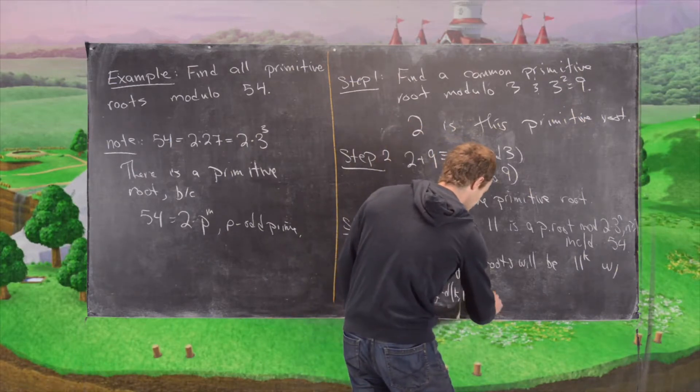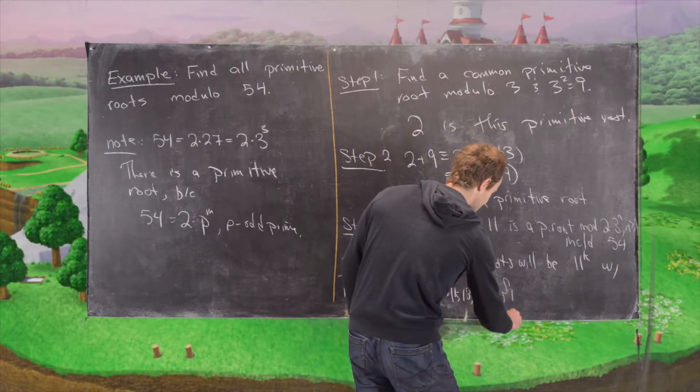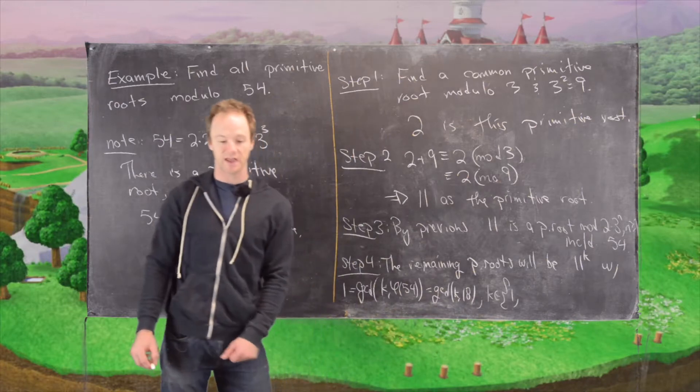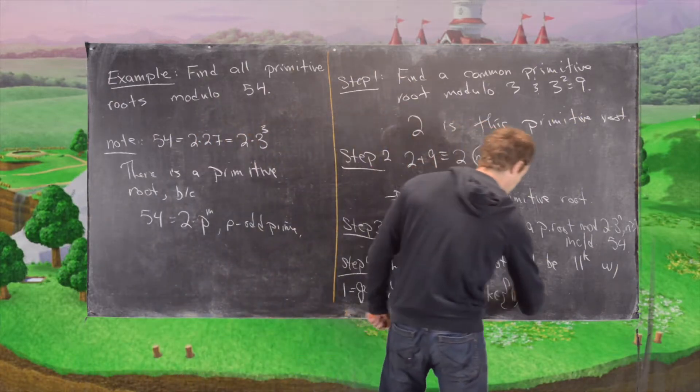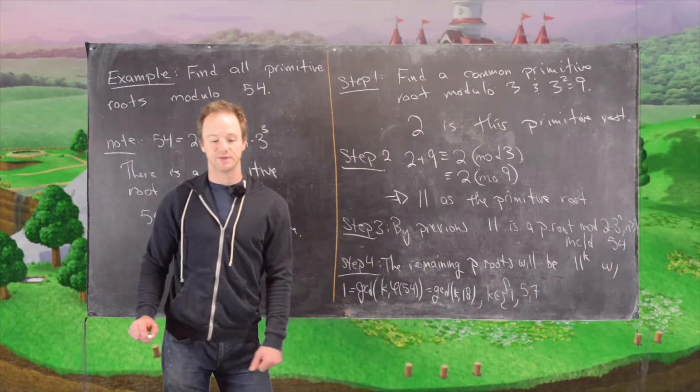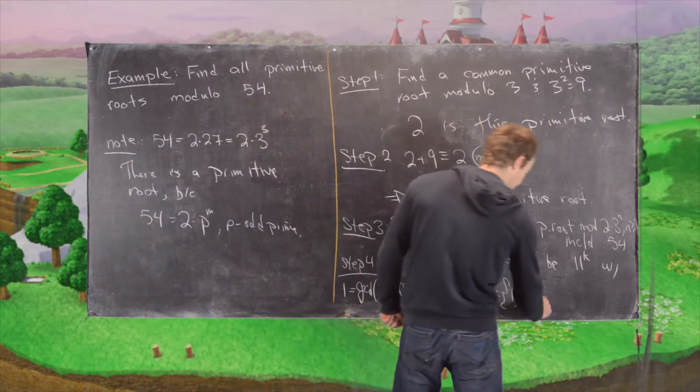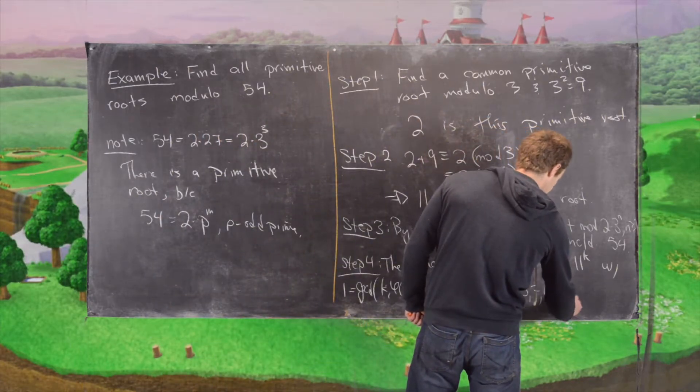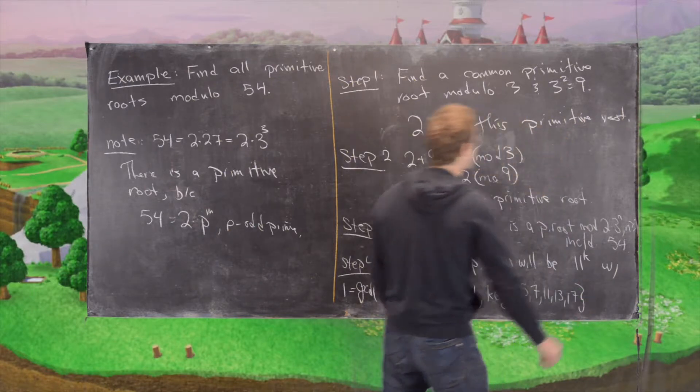So that tells us the following. So that tells us we have k in the following set: 1, so we can't use 2, 3, or 4. So we have 5, 7. We can't use 8, 9, or 10. And then we have 11,